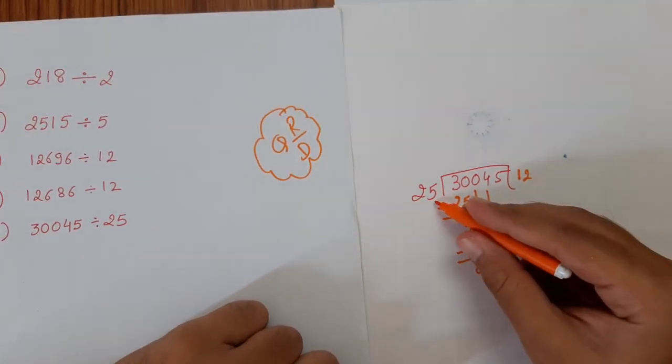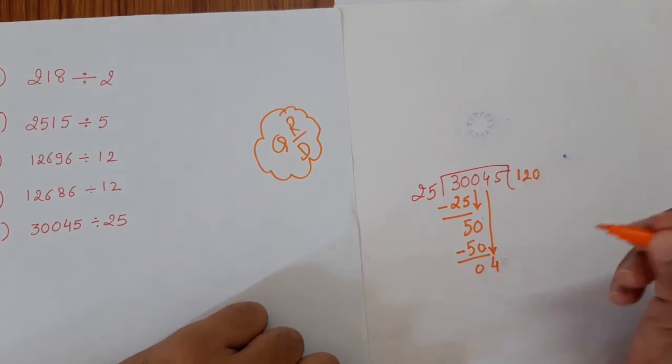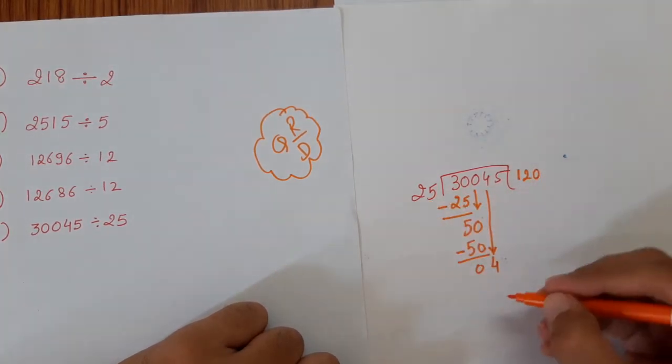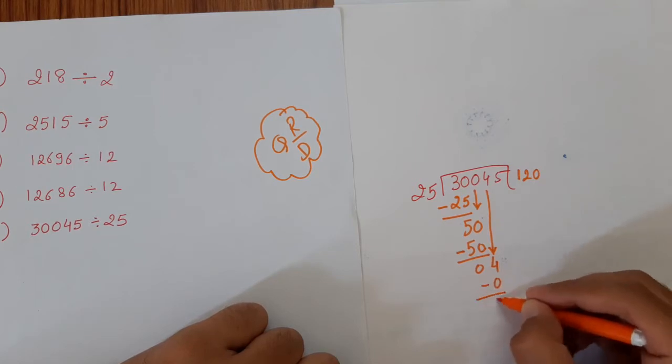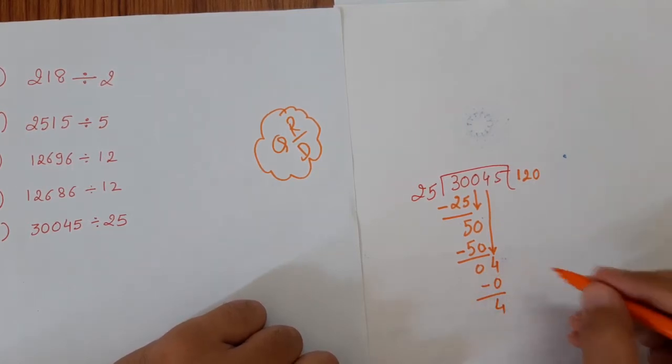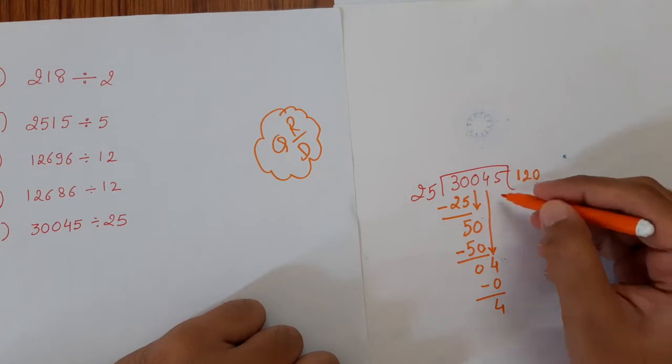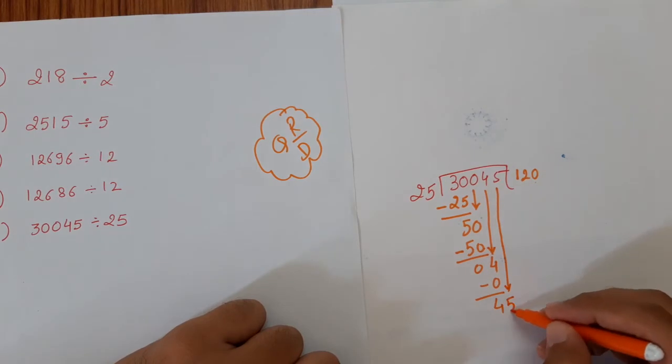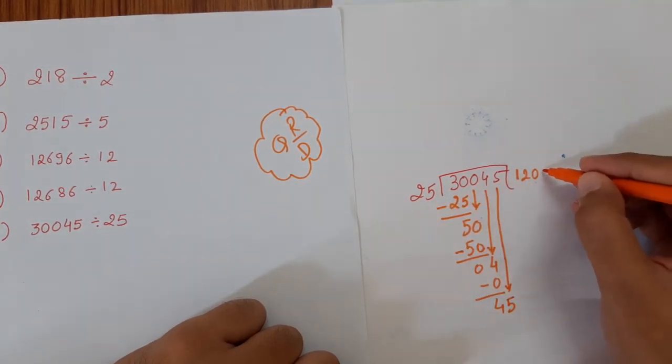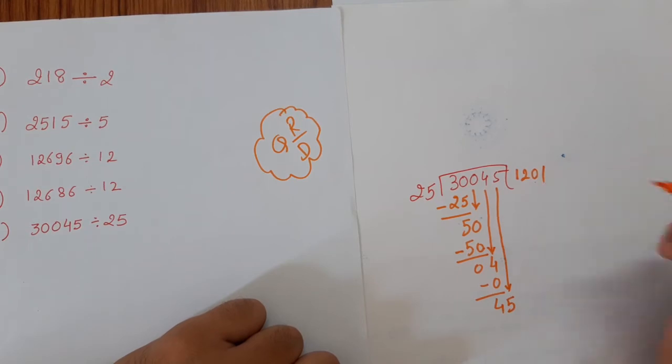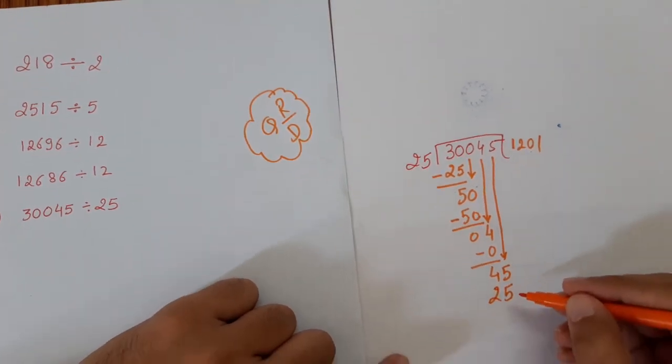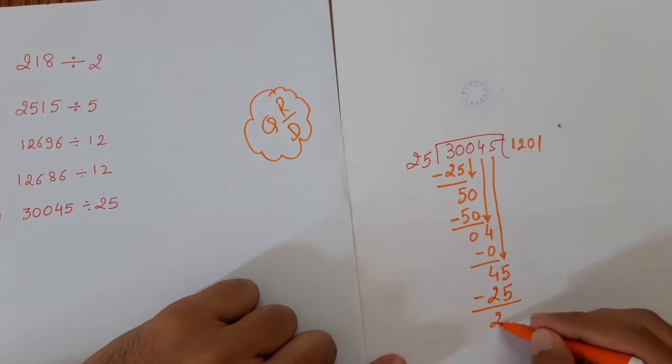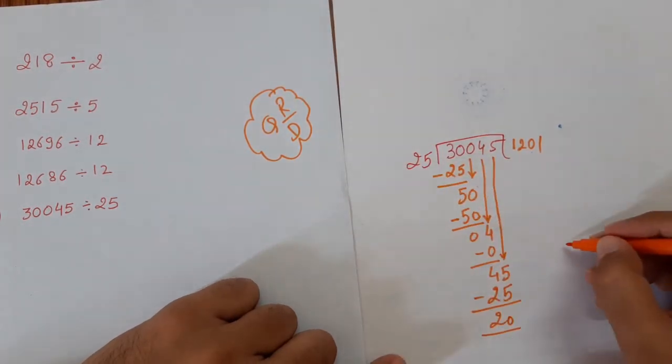Take down 4. So 25, 4 is less than that, so 0. 25 times 0 is 0. Make sure you do this step because if you are having any confusion why the 0 is coming, do this step. Slowly and gradually you can skip this. So now we get 45. So 25 into 2 is 50, so into 1, yes, 25. So we get 20.